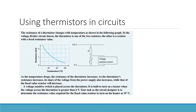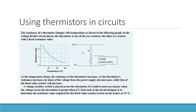Let's look at an actual textbook question about thermistors. The resistance of a thermistor changes with temperature as shown in a graph. In a voltage divider circuit, the thermistor is one of two resistors — the other is a fixed resistor. This is why I taught you voltage dividers, so we can now jump into using them with transducers.